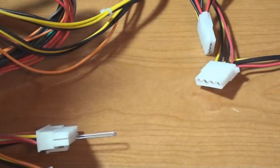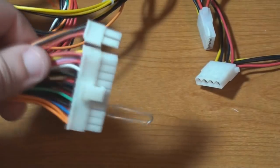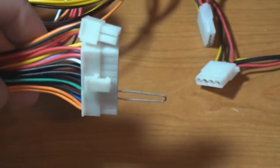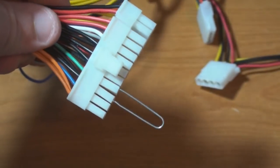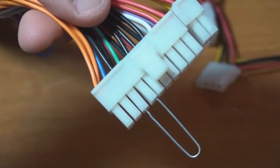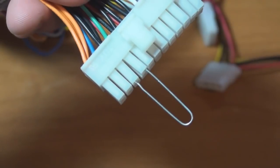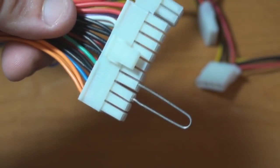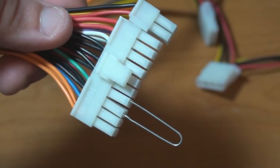You also need to locate your 24-pin power motherboard connector, which is this big guy right here. What you want to do is put a paper clip in the green and the black wire. What that's going to do is trick the power supply into thinking that it's connected to a motherboard so it will turn on for you.